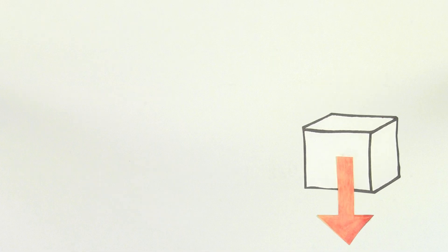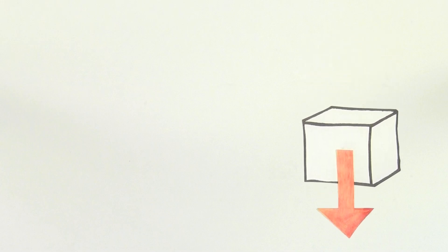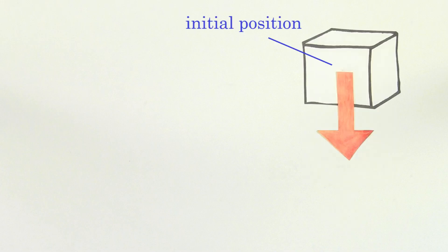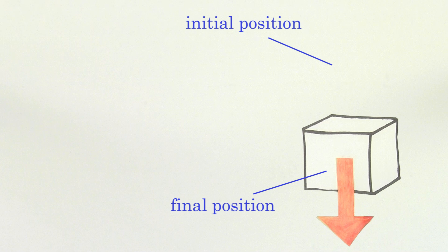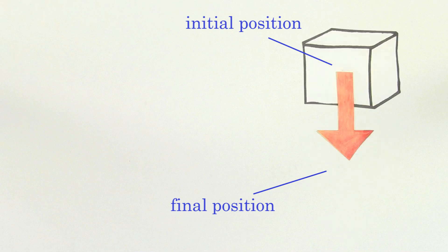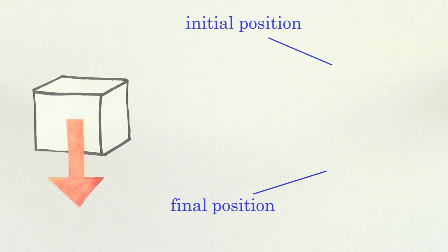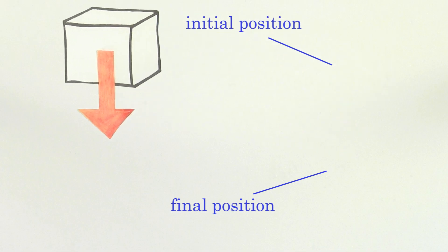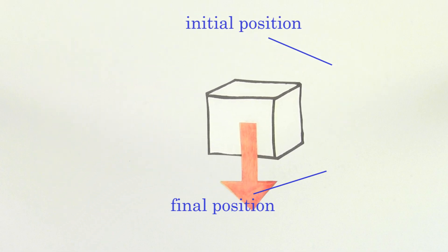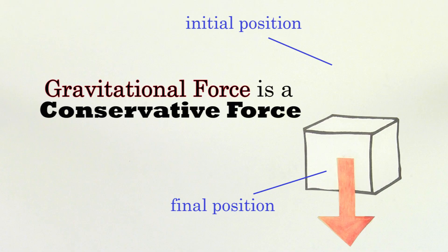In other words, the work done by the gravitational force doesn't depend on the specifics of the path taken by the mass. The work done by gravity only depends on the initial and final position of the mass. In fact, you could allow the mass to take any path from this initial point to the final point, and the work done by gravity is still just going to be 294 joules. Because the work done by gravity doesn't depend on the path taken, we call gravity a conservative force.